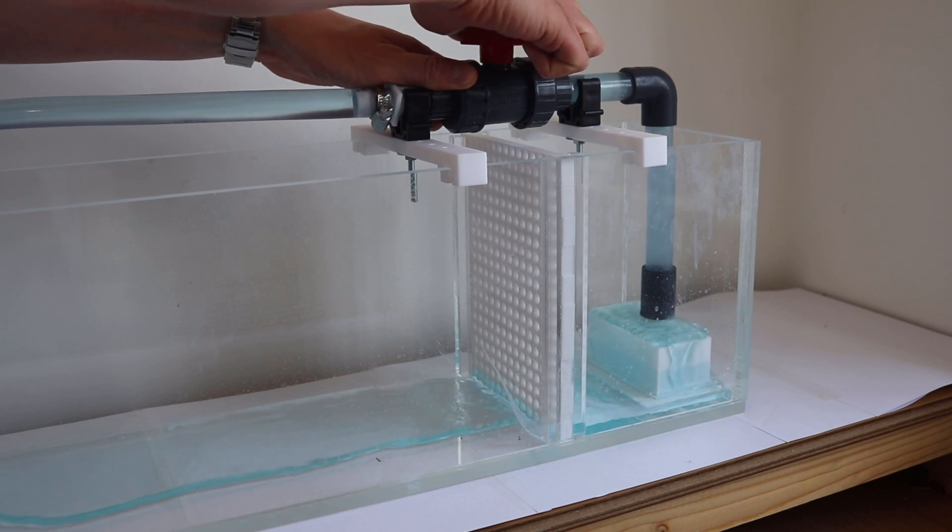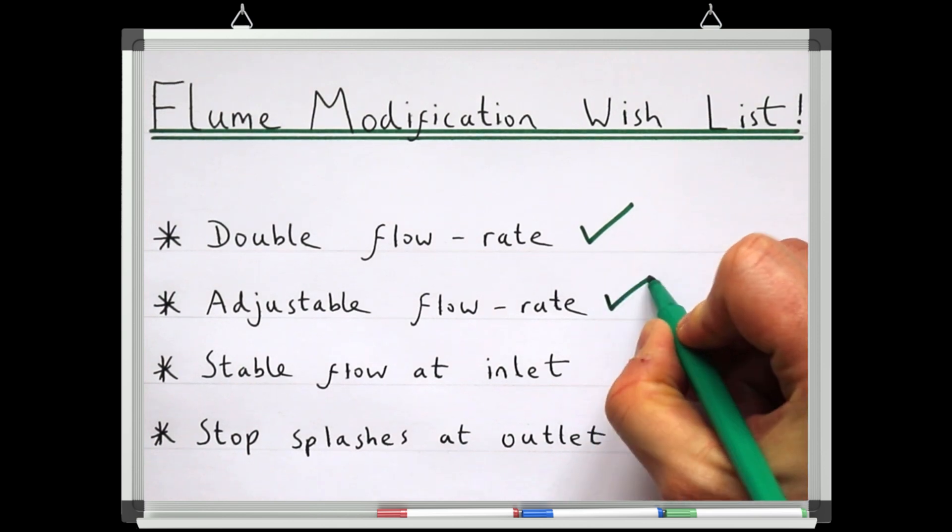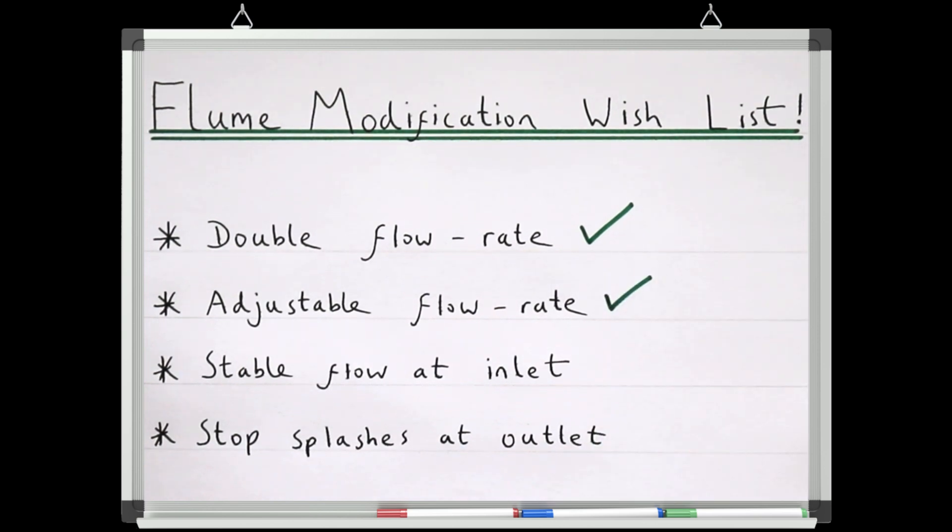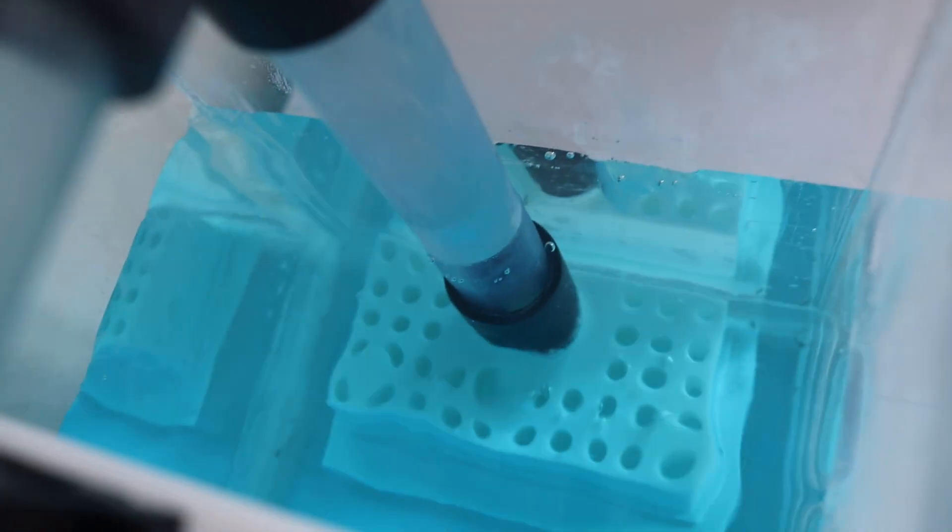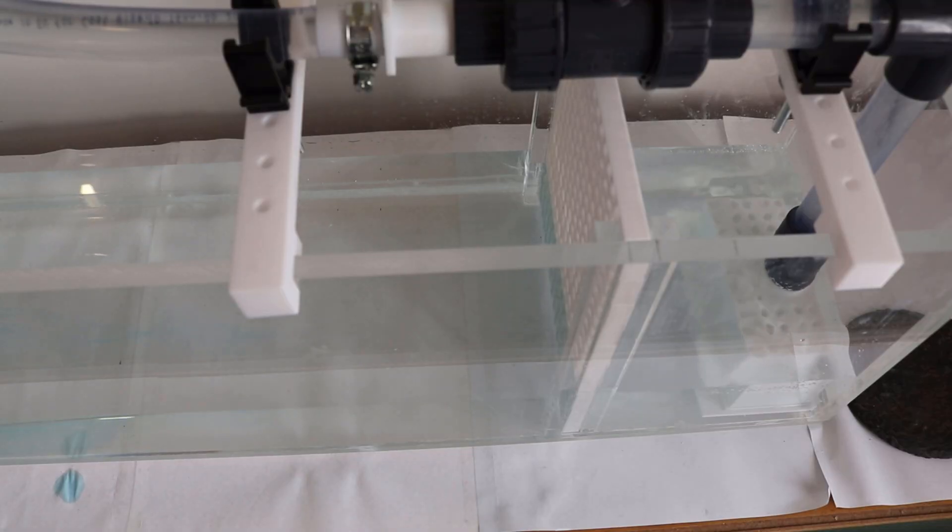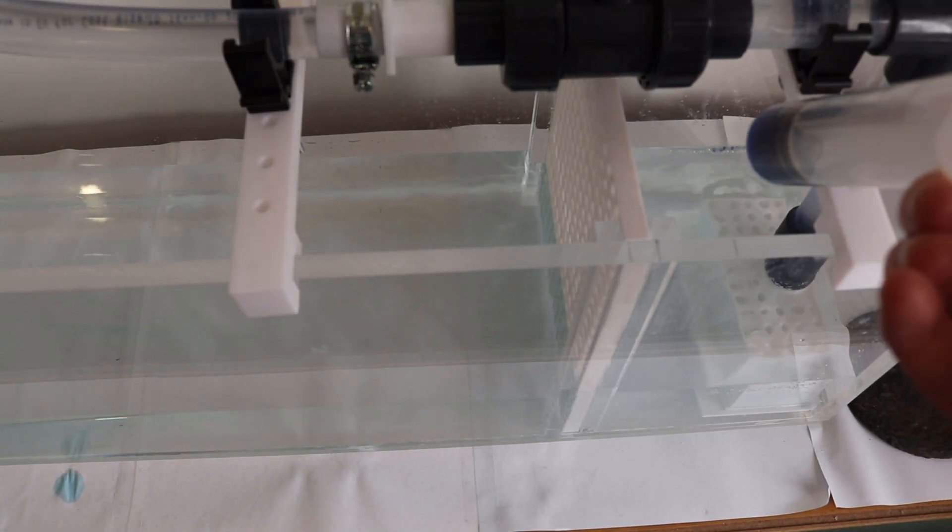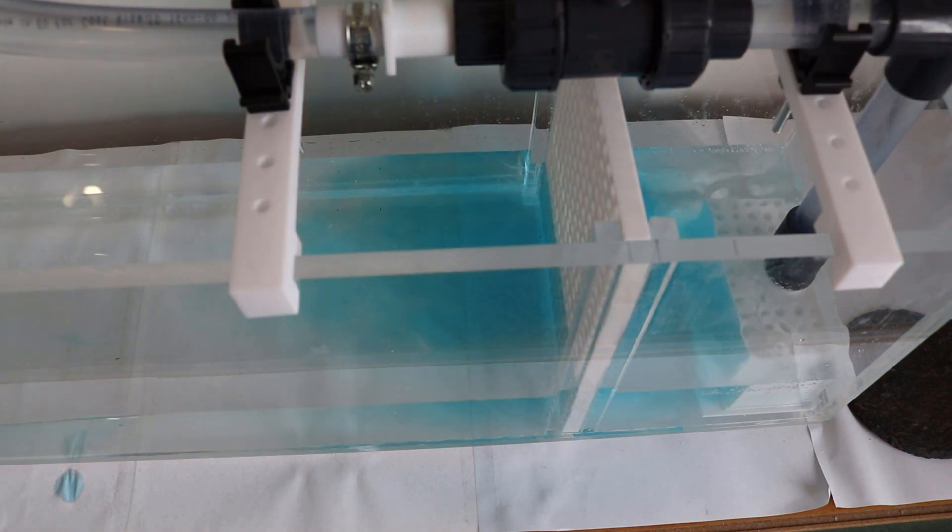So now we have an inlet where we can control the flow rate, and we have relatively stable flow entering the flume. But to make sure, we can inject some dye at the inlet to make sure we don't have any massive jets or preferential flow paths. Looks reasonable.